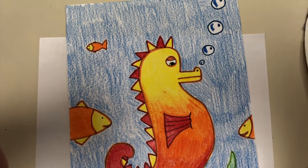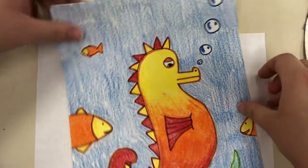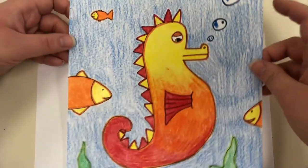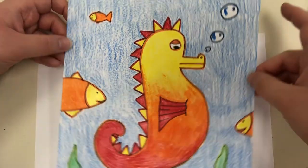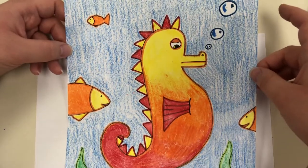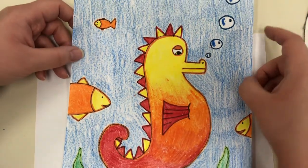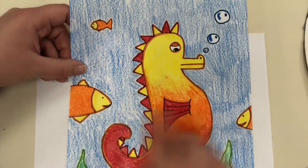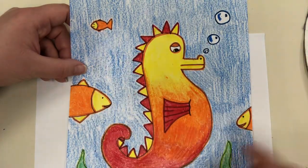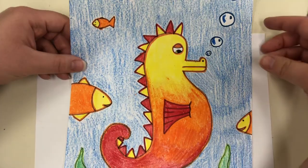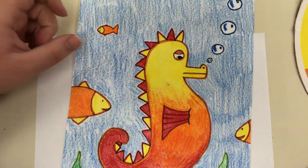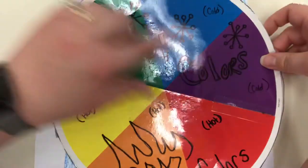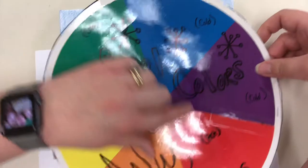Hey guys, today we're going to be creating a picture using warm and cool colors to create a strong contrast. We're doing a seahorse with some fish in the background. Notice that the seahorse is yellow, orange, and red, and the fish are yellow, orange, and red, and the background is all blues and greens, which are cool colors.